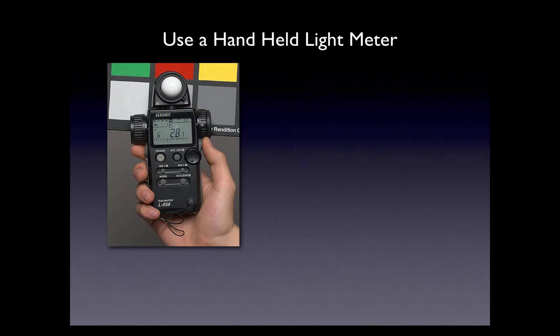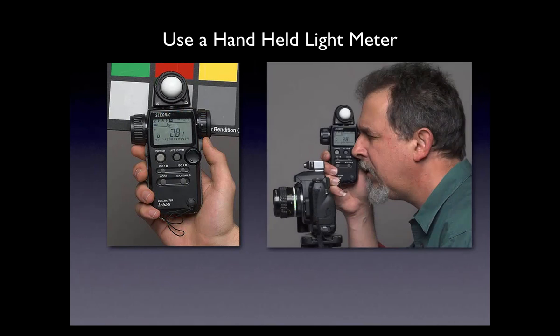Robert wants to know if you have an opinion about the ExpoDisc. Well, the ExpoDisc works pretty much like an incident light meter — you put it on the lens, point the camera at the light source. It's exactly like using an incident light meter. But if you're walking over to your subject, that kind of defeats the purpose of the ExpoDisc, other than saving the cost of the incident meter.